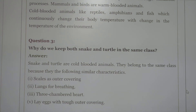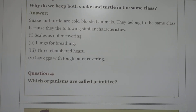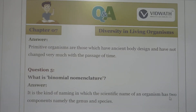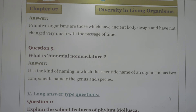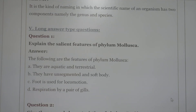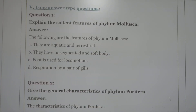Snakes and turtles are kept in the same class because they have scales as outer covering, both breathe through lungs, both have a three-chambered heart, and both lay eggs with a tough outer covering. Primitive organisms are those which have an ancient body plan and have not changed much with the passage of time. Binomial nomenclature uses two names — one for the genus and one for the species. The salient features of phylum Mollusca: they are aquatic and terrestrial, they have an unsegmented and soft body, foot is used for locomotion, and respiration is by gills.